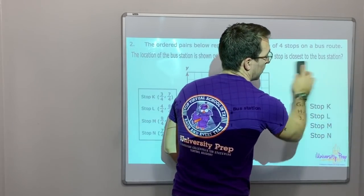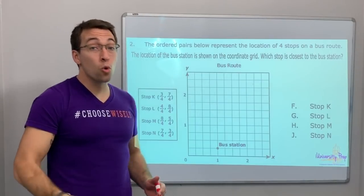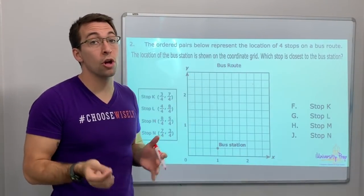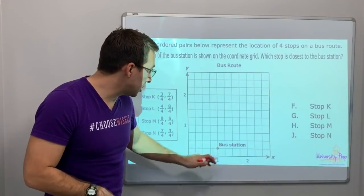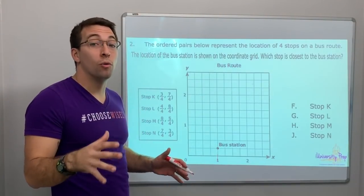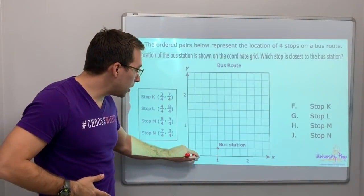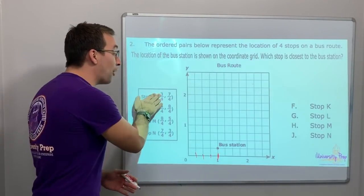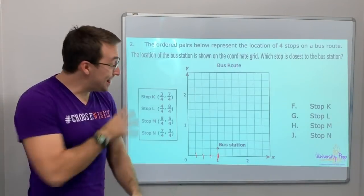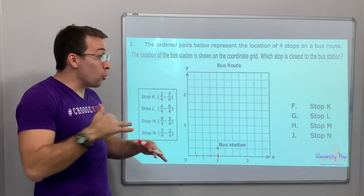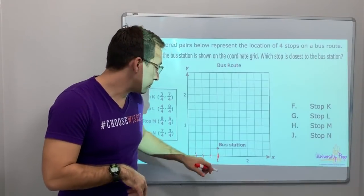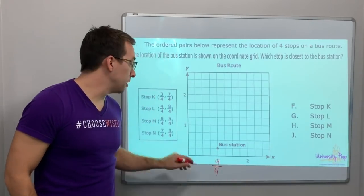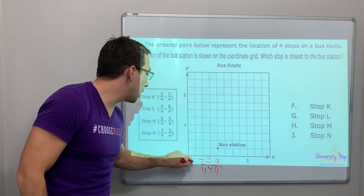Number two. The ordered pairs below represent the location of four stops on a bus route. The location of the bus station is shown on the coordinate grid. Bus station — that's at 1. Do you see what they did? Look: 1, 2, 3, 4 — but that is 1. This is combining fractions and the coordinate plane. This is a serious type of question — don't get tricked. So we know this: 1 is 4/4. 4 over 4 equals 1. So this is 3/4, 2/4, 1/4.